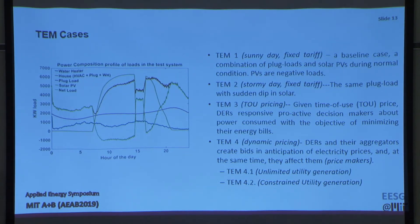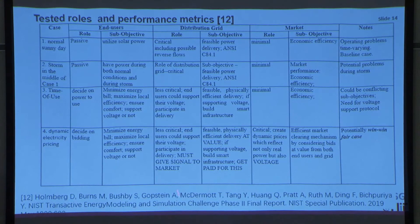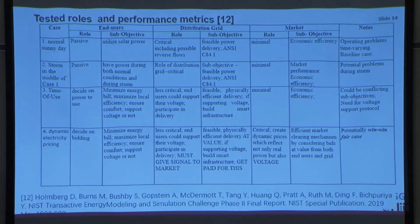We analyzed four cases: a sunny day with no storm front, a stormy day with a sudden solar dip, and from an economics perspective, what it means for devices to be paid using time-of-use pricing versus dynamic pricing. The report recently published provides full details, but to summarize: we qualitatively analyzed the role and sub-objectives of different stakeholders — including houses, the distribution grid, and the market — under each pricing scenario.